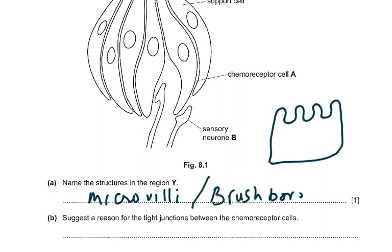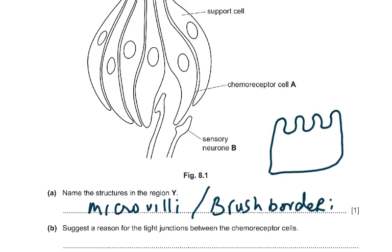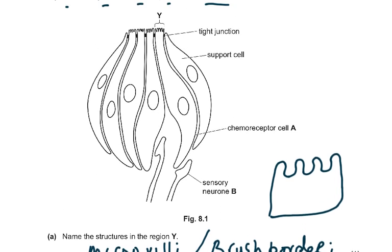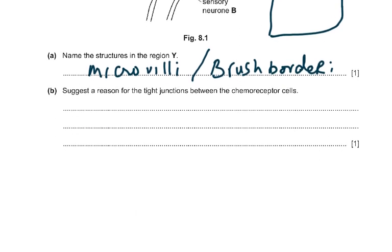The next part asks to suggest a reason for the tight junctions. The tight junctions are where the cell membranes are very closely attached to each other. The reason for the tight junctions between the chemoreceptor cells is to prevent movement of ions between the cells. They also don't allow the movement of channel proteins or chemicals between the cells.